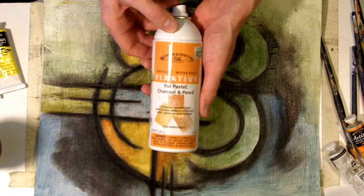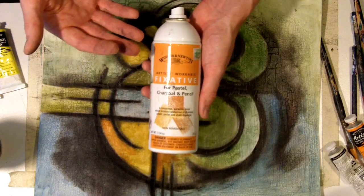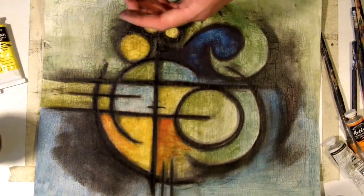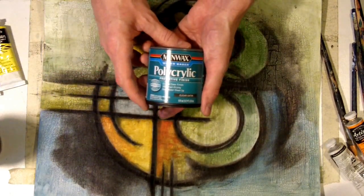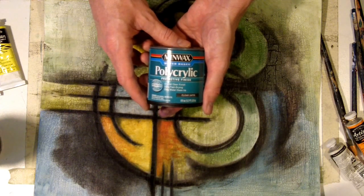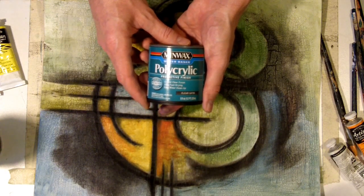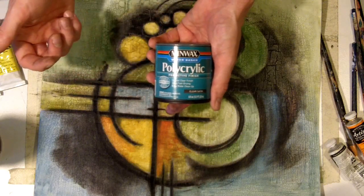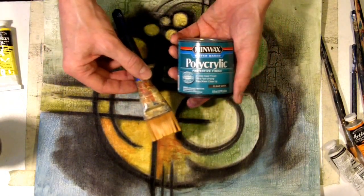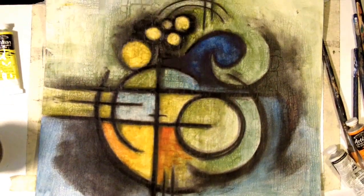All right, the other things you're going to need are some fixative—you can also use hairspray if you're on a budget, White Rain is like a dollar a bottle I think—you're going to need acrylic polycrylic varnish polyurethane, that's what it's called. I got this at Home Depot, you can get it at Lowe's. And you're going to need some sort of brush to apply it with.